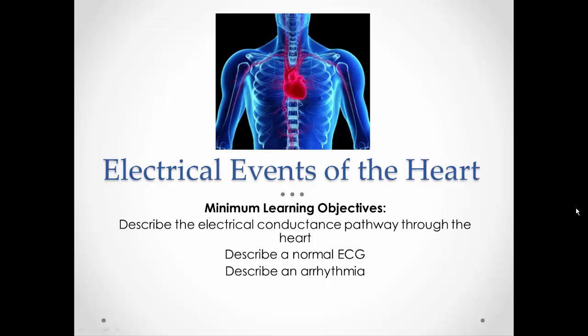In the previous video, we looked at those auto-rhythmic cells and how they generated a pacemaker potential. Now we're going to combine their efforts and look at how they affect the overall electrical events of the heart — the electrical conduction pathway used to cause the atriums to contract and then the ventricles contract in sequence. Then we'll look at how we measure what's going on with the heart using an ECG to get an overall feel of the electrical activity of the heart, and we'll also look at some arrhythmias — when the ECG shows strange or abnormal patterns.